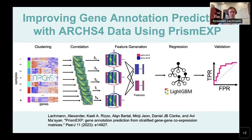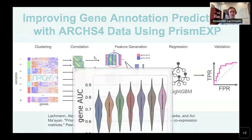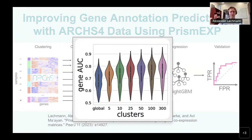The algorithm is simple: first, unsupervised clustering to retrieve tissues or cell types. You can set the parameter for how many clusters to identify — we've tested up to 300 clusters. Then for each cluster, you build a separate gene-gene similarity matrix. From those, you build a feature space used in a machine learning algorithm to predict whether a gene should be annotated with a certain term or not. This approach significantly improves our previous efforts — the more clusters you have the better it gets, and the more ARCHES-4 data there is, the better it will scale.